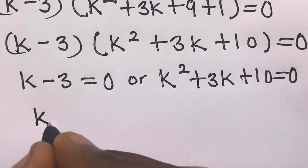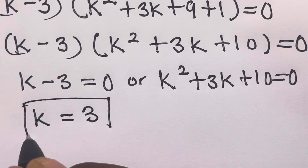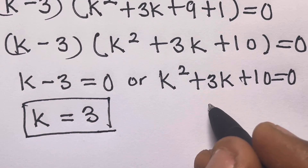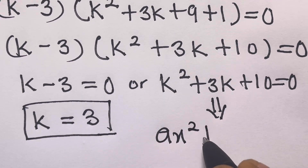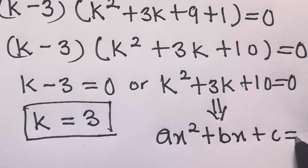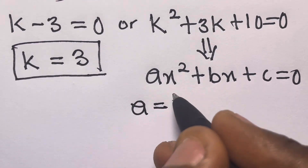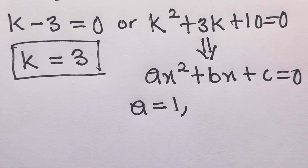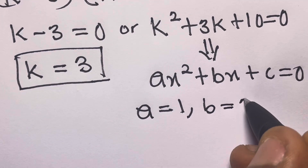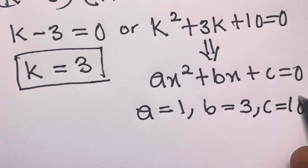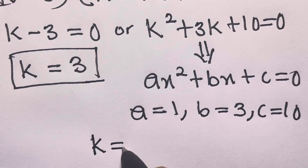From k minus 3 equals zero we get our first solution k equals 3. The second factor k squared plus 3k plus 10 equals zero is a quadratic of the form ax squared plus bx plus c equals zero, where a equals 1, b equals 3, and c equals 10.